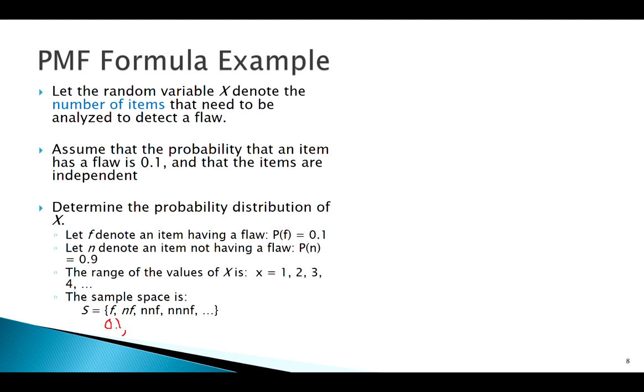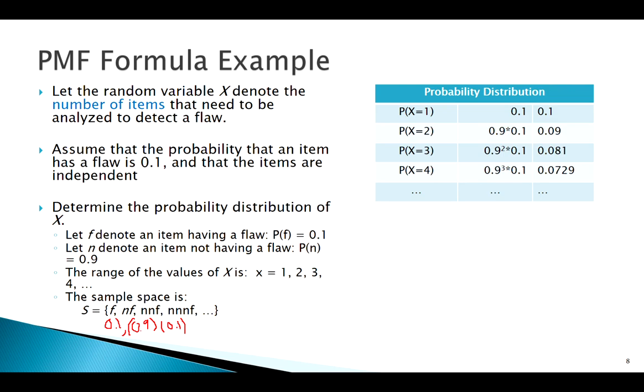What about the second time around? Well if they're independent I should be able to use my independent multiplication rule and say okay for no flaw that's 0.9 times having a flaw the second time that's 0.1. So maybe you can see kind of a pattern developing there.